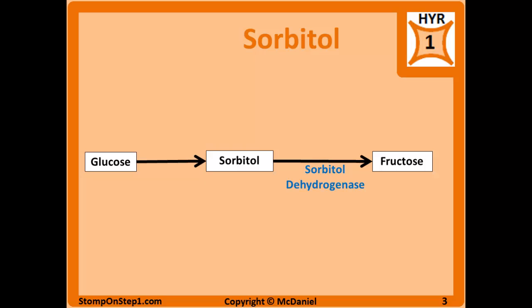Sorbitol is the alcohol version of glucose, and tissues make a little bit of sorbitol sometimes to help sequester the sugar in that tissue so it'll have it to use later. In small amounts, sorbitol doesn't create any problems because there is an enzyme called sorbitol dehydrogenase that will get rid of excess sorbitol and turn it into harmless fructose.